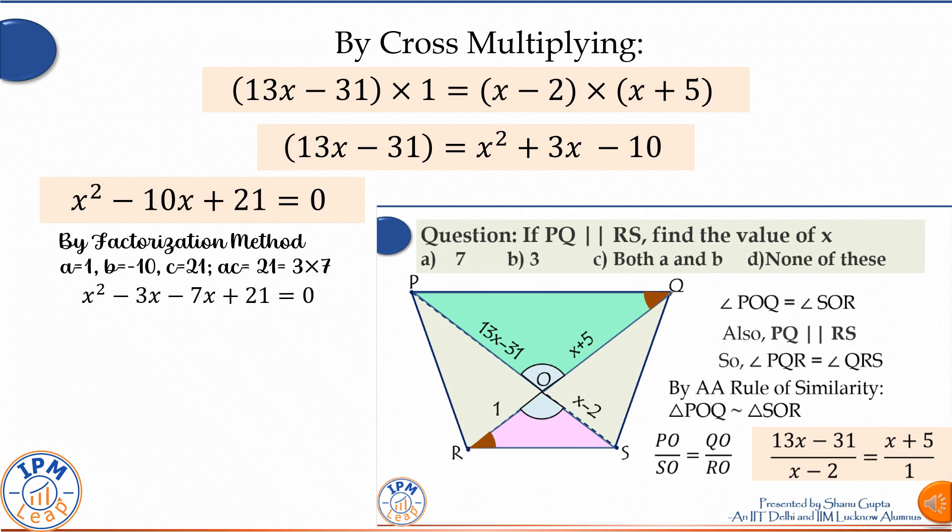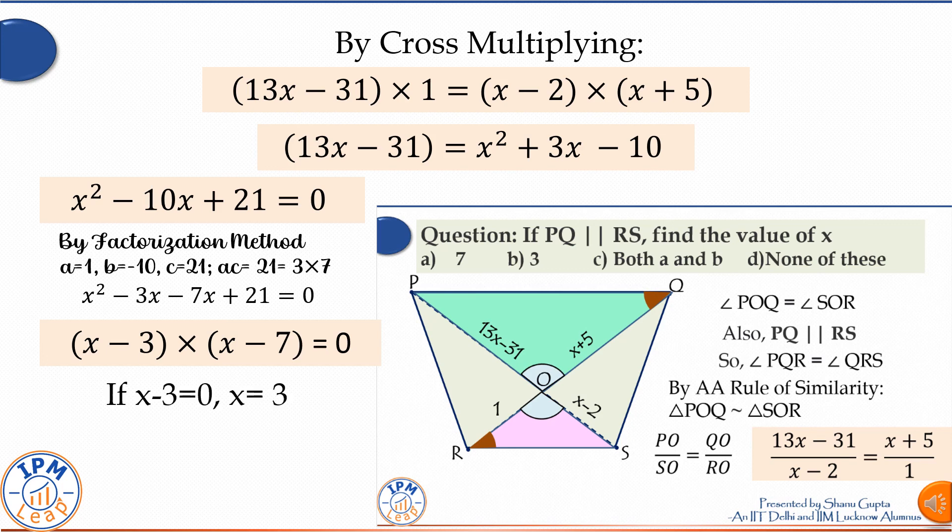If (x - 3) is equal to 0, then x is equal to 3. Else if (x - 7) is equal to 0, we get x is equal to 7. The two roots of this equation are 3 and 7.